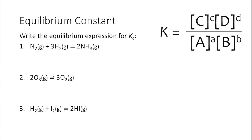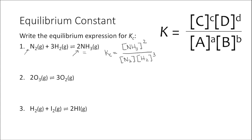For example one, K sub C is equal to the concentration of our product — in this case the only product is ammonia, NH3 — raised to the power of its coefficient from the balanced chemical equation, divided by the concentration of our reactants: N2 raised to the power of 1, times H2 raised to the power of 3. K sub C describes the relationship of the concentrations of ammonia, nitrogen, and hydrogen when this reaction is at equilibrium.